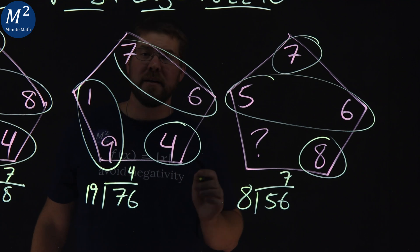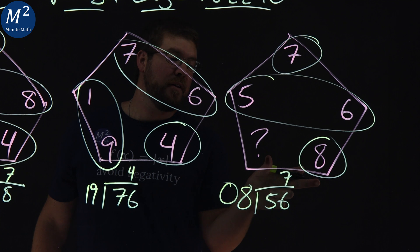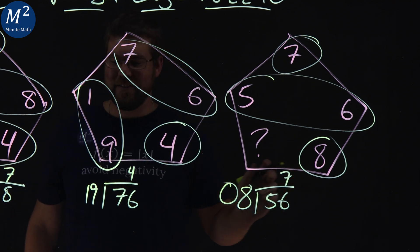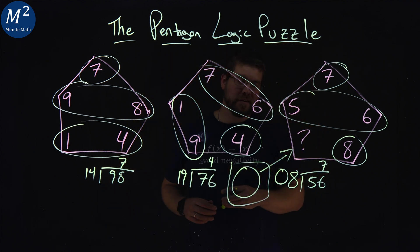And really, this is actually pretty simple if you think about it. Don't forget one of the greatest numbers of all time, 0. 08 is still a number. It works right there. And so, 08 goes into 56 seven times. And so, good old 0 is the solution to this pentagon logic puzzle.